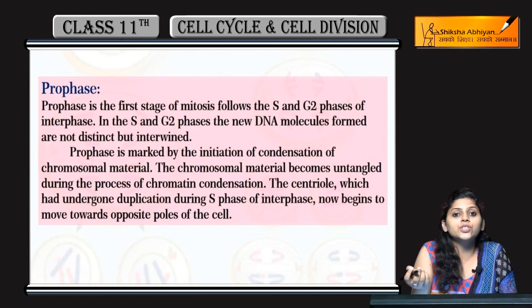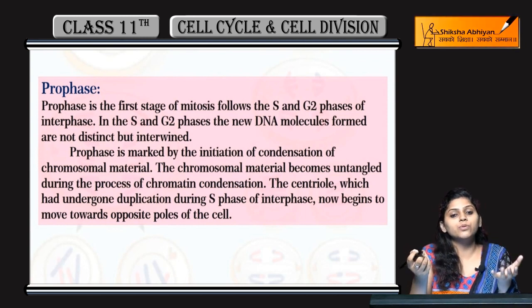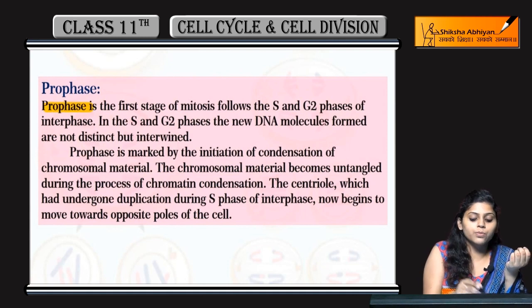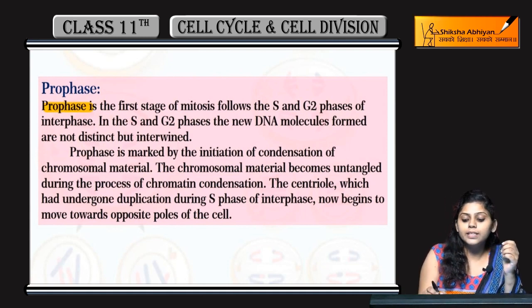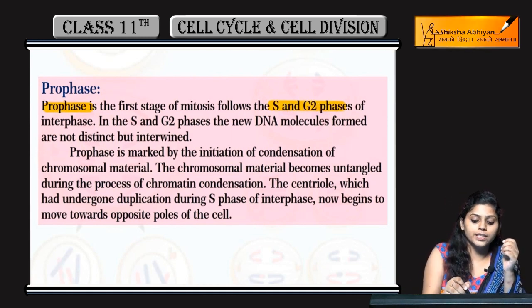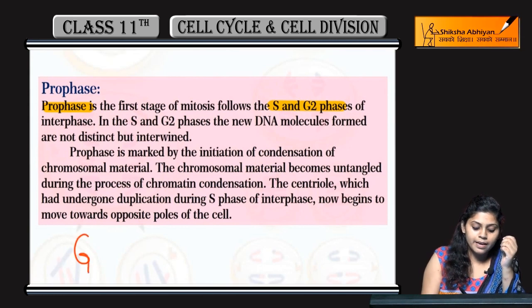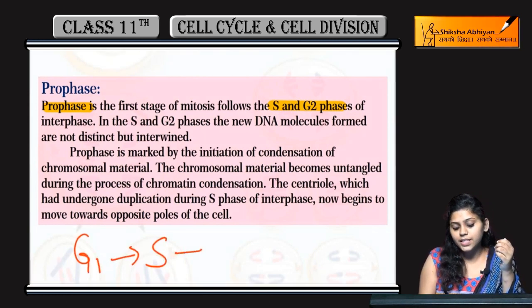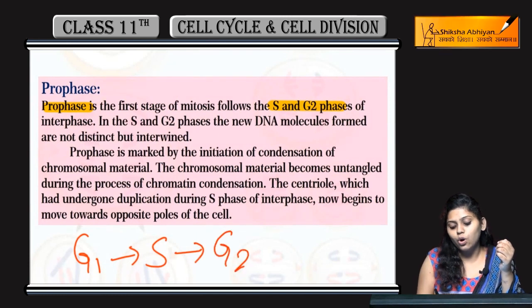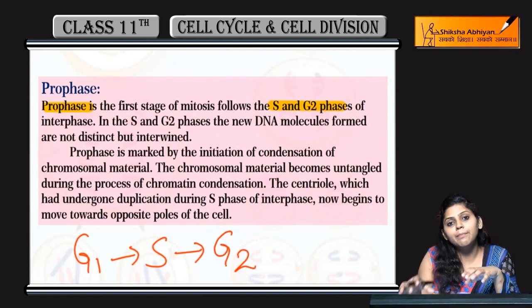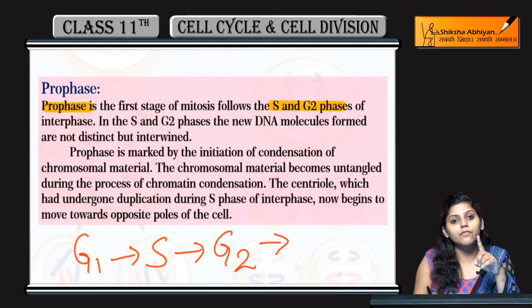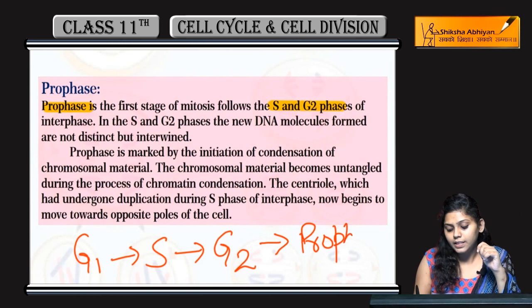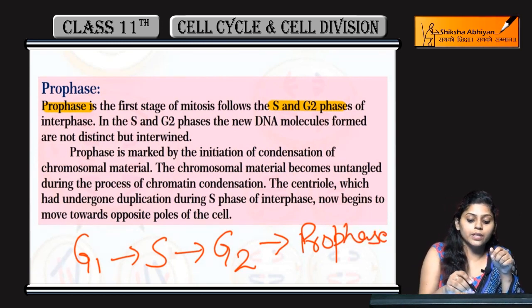Jab actual cell division honi hoti hai, uski first stage ko pro phase bolte hai. Ye follow kerti hai S and G2 phase. Pehle G1 phase aata hai interphase ka, then synthesis phase, and then G2 phase. Is ke baad jo stage aati hai M phase ki, uska first phase hai pro phase. Is se hum detail me study karenge.